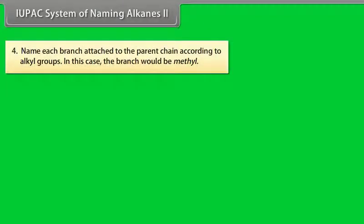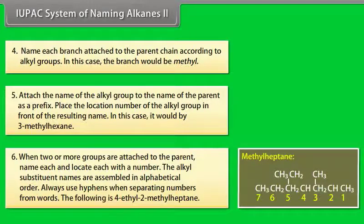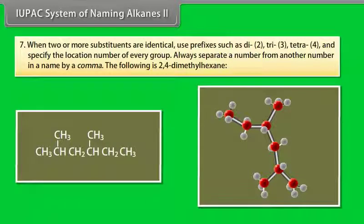Number 4, name each branch attached to the parent chain according to alkyl groups. In this case, the branch would be methyl. Number 5, attach the name of the alkyl group to the name of the parent as a prefix. Place the location number of the alkyl group in front of the resulting name. In this case, it would be 3-methylhexane. Number 6, when two or more groups are attached to the parent, name each and locate each with a number. The alkyl substituent names are assembled in alphabetical order. Always use hyphens when separating numbers from words. The following is 4-ethyl-2-methylheptane.